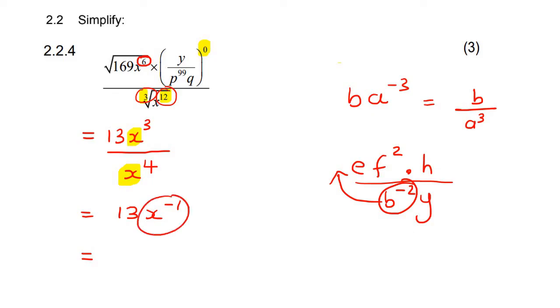So this x^(-1), we're going to take it to the bottom. So we're going to keep the 13 where it is, but we're going to put the x at the bottom. So you end up with 13 over x as the final answer.